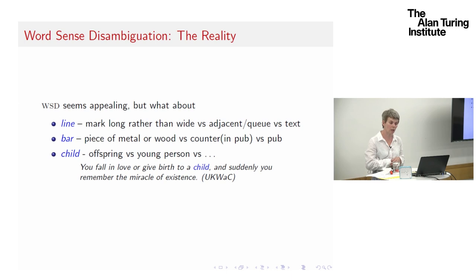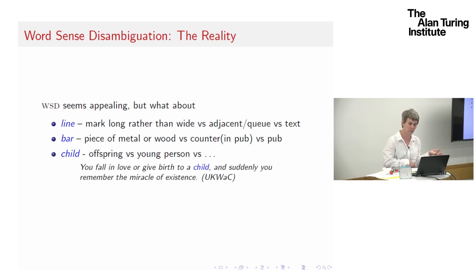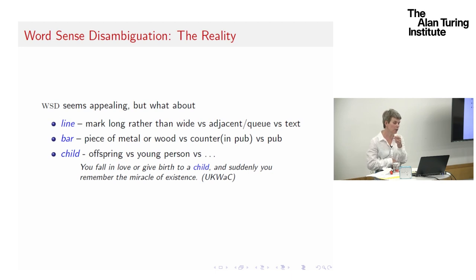You have words like 'child' with the meanings offspring and young person. If I look at a sentence like 'you fall in love or give birth to a child and suddenly you remember the miracle of existence,' both the offspring sense and the young person sense are evoked by that sentence simultaneously. Although you can see the different senses, they can both occur at the same time.